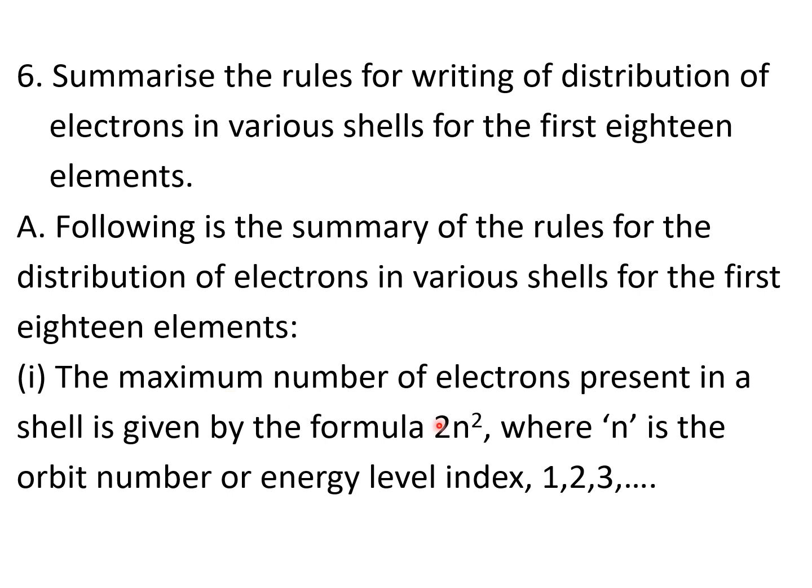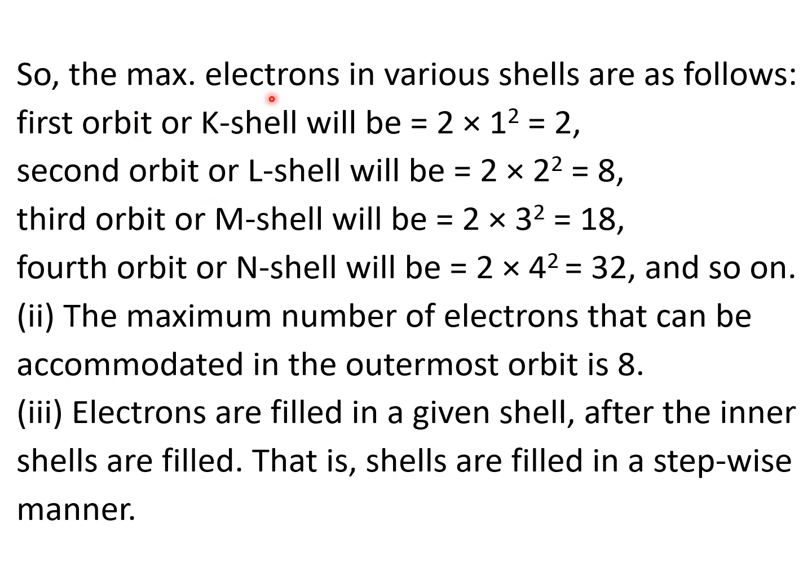First point is the maximum number of electrons present in a shell is given by the formula 2n², where n is the orbit number or energy level index 1, 2, 3, dot dot dot, it continues like this. So the maximum electrons in various shells are as follows: first shell which we also call K shell will be 2 × 1² = 2. By now we all know that the innermost shell or the first shell can have at the most 2 electrons.